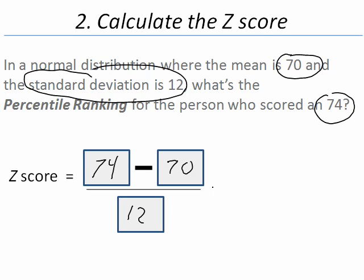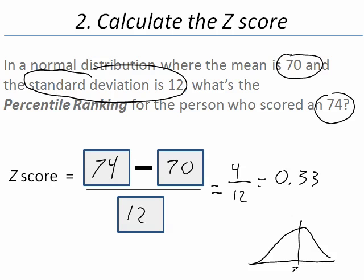Now we need to solve this. 74 minus 70, that's 4, divided by 12. That's 0.33. What's that saying? We got a normal distribution where the mean is 70 and the value is 74. The distance between these two is one-third of the standard deviation, not quite a full standard deviation.